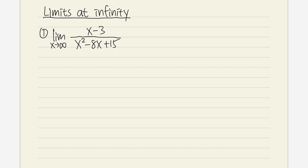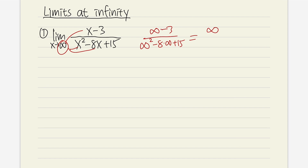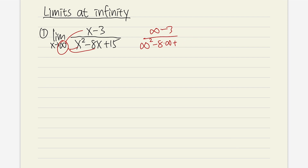We are not going to be using any graphs or any calculator. We are just going to do the math by hand and reason things out. If we plug in infinity into all the x's, it looks like we have infinity minus 3, which is infinity on the top. And then we have infinity squared minus 8 times infinity plus 15 — infinity squared is so much bigger than 8 times infinity, so that's infinity, and adding 15 still gives infinity. So we get infinity over infinity, but we cannot draw any conclusion yet. This is another indeterminate form, so we have to do more work.